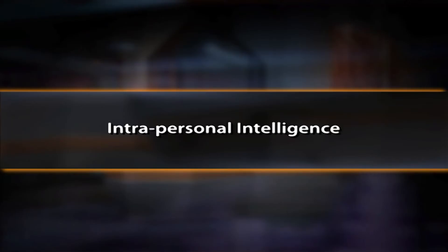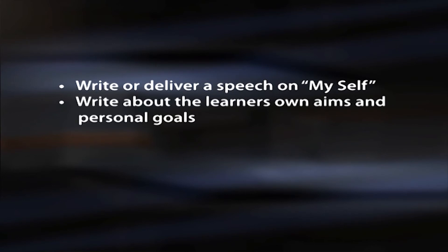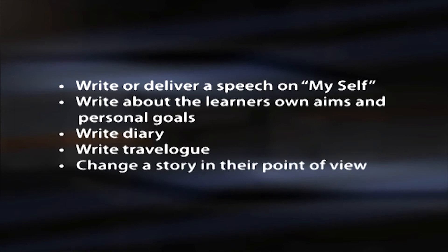Intrapersonal intelligence: self-knowledge leads to understanding of motives, goals, strengths and weaknesses. This intelligence is essential for English learning. Learners who are aware of their strengths and weaknesses in learning English will be able to deal with underlying issues and overcome them. Teachers can encourage students to write or deliver a speech about themselves, write about their own aims and personal goals, write a diary, write a travelogue and change a story from their own point of view.